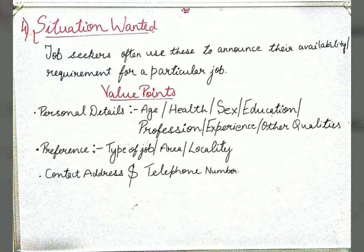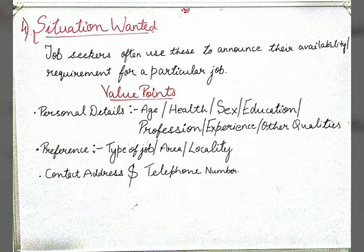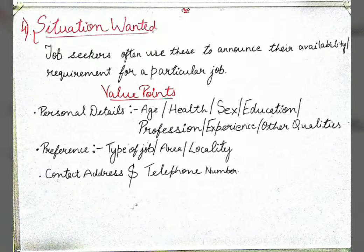The value points for a Situation Wanted advertisement are: personal details including your age, health, sex, education, profession, experience, and other qualities; your preference — what type of job you want, what area or locality you prefer; and finally your contact address and telephone number through which a company can contact you.